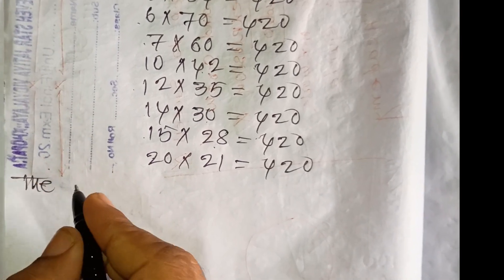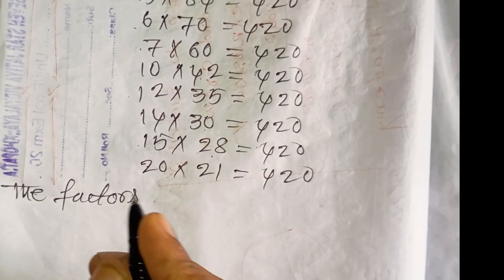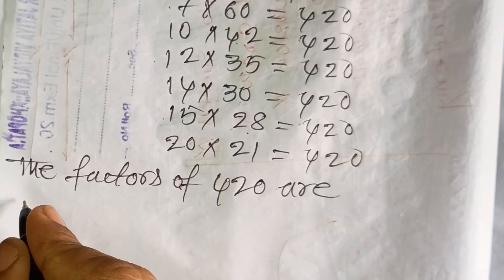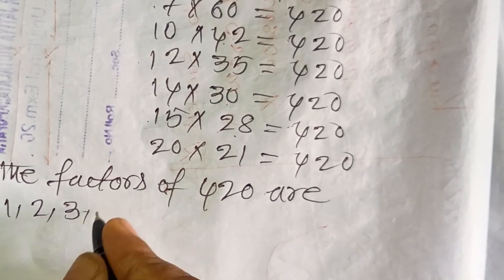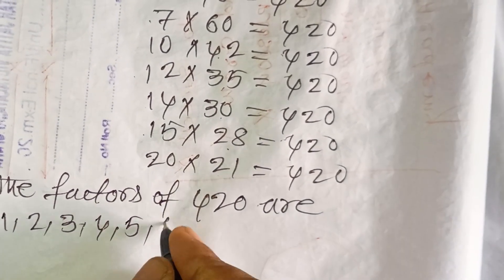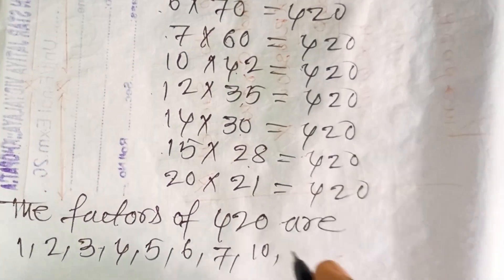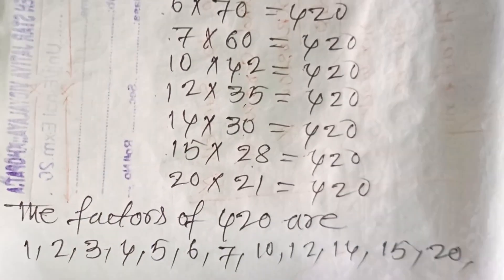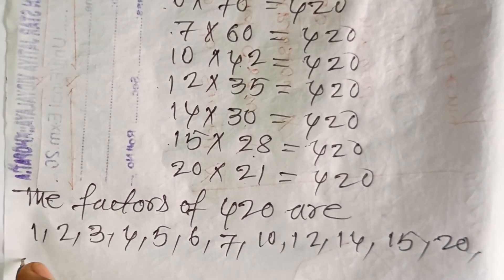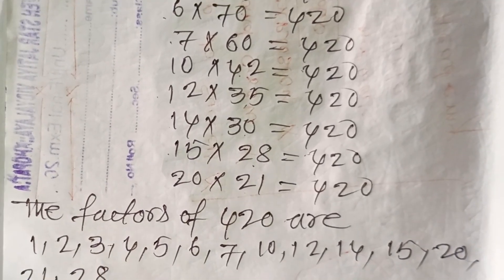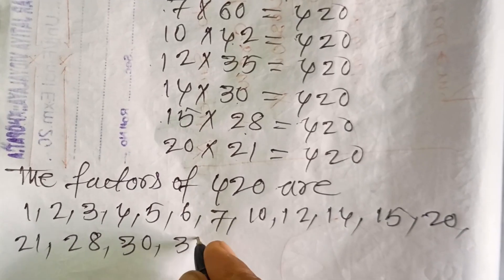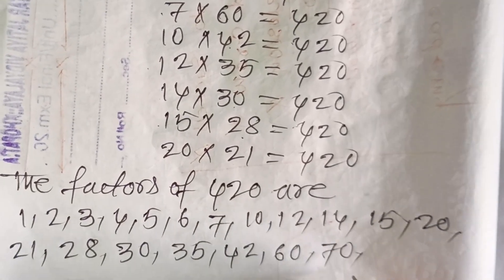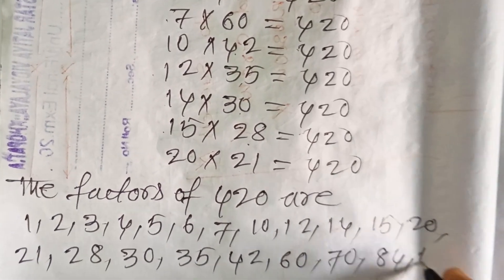The factors of 420 are 1, 2, 3, 4, 5, 6, 7, 10, 12, 14, 15, 20, 21, 28, 30, 35, 42, 60, 70, 84, 105, 140, 210, and 420.